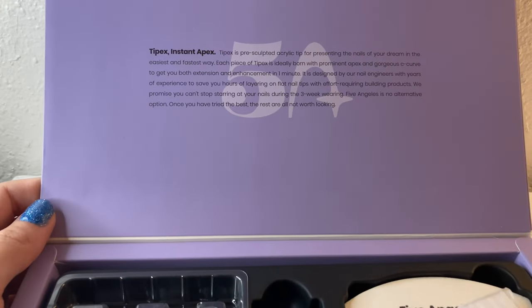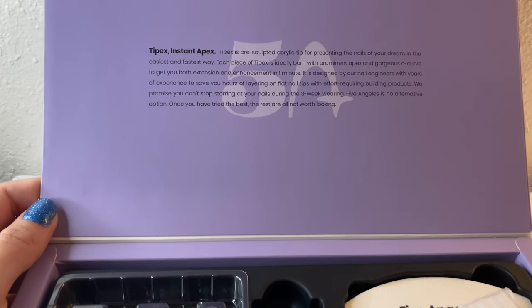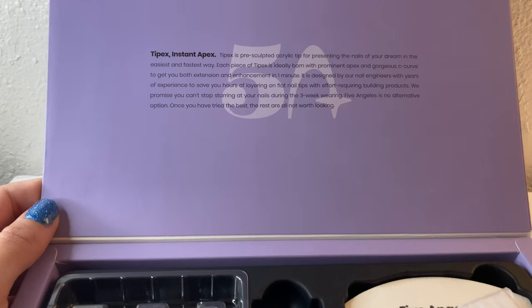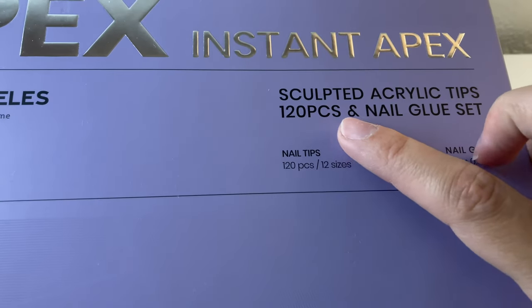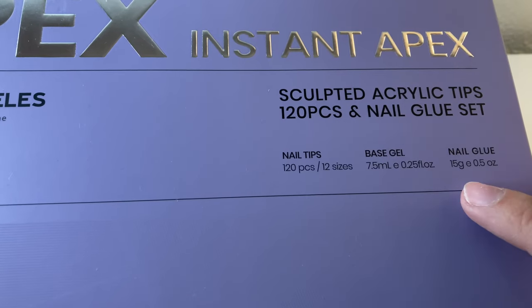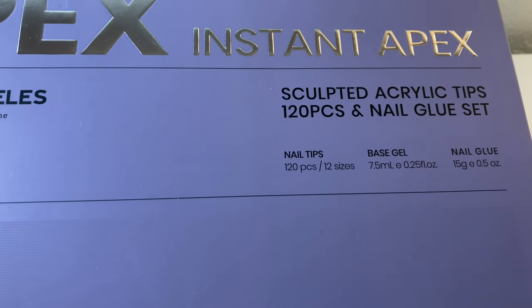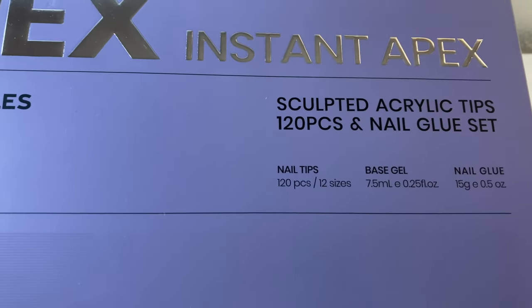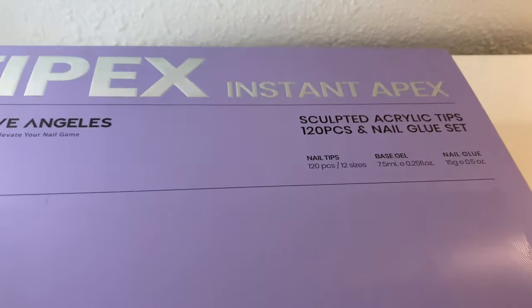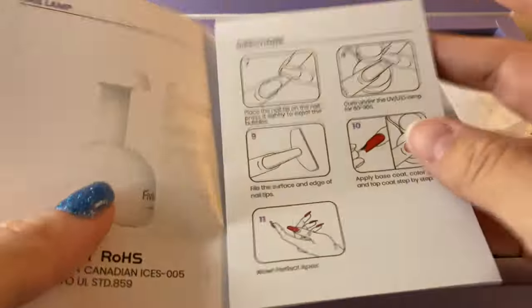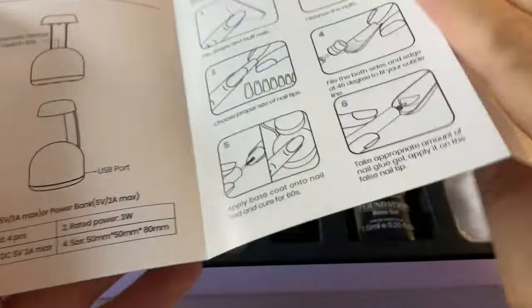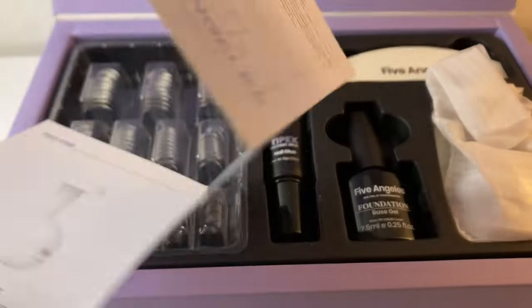So they actually sent me two items. This is the first box I am going to unbox for you guys and show you everything that is in it. It comes with 120 nail tips and basically everything you need to do your own Gel-X nails. The nail tips, the base gel, the nail glue, and a nail lamp. So here first we have the instruction manual and by the way their packaging is so cute. I love all of the purple and everything.